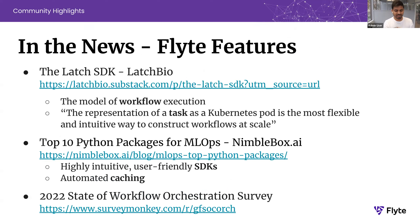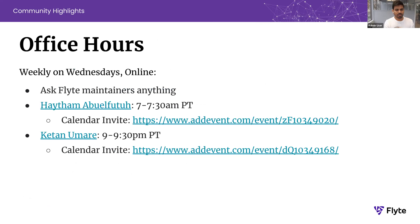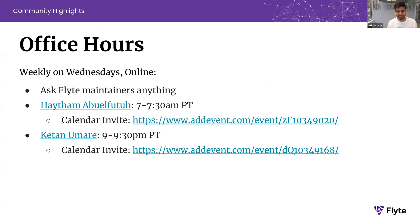We want to continue growing, and this office hours has been getting more and more popular, but most people don't know when office hours are or how to reach there. The best way to find an invite for office hours is to go to flyte.org community tab. In the community tab, you'll see this event, which is the OSS sync.